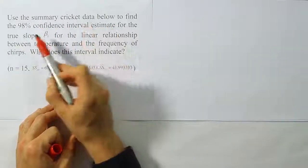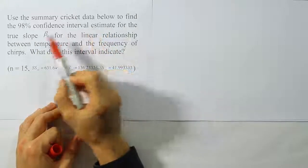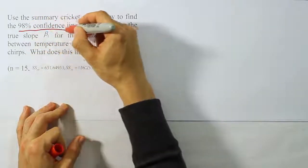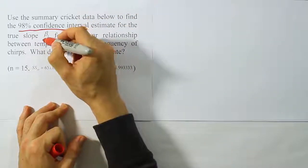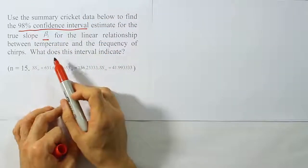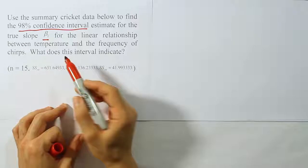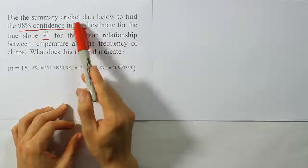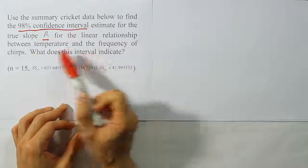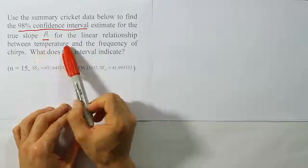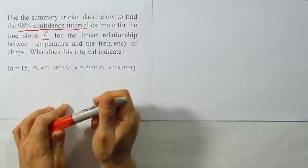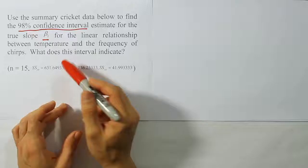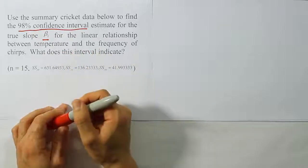Use the summary cricket data below to find the 98% confidence interval estimate for the true slope beta1. We want to construct the 98% confidence interval for beta1, for the linear relationship between temperature and the frequency of chirps. This is related to data from a previous problem where we tested whether there is a linear relationship between the temperature outside and the frequency of chirps for crickets.